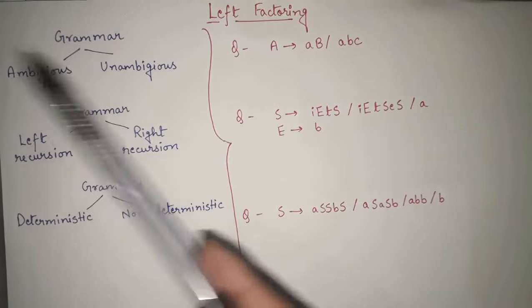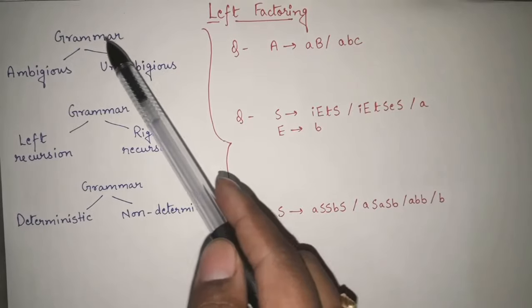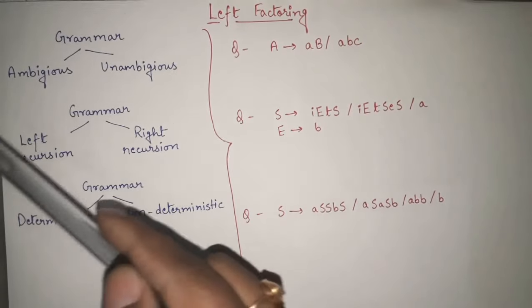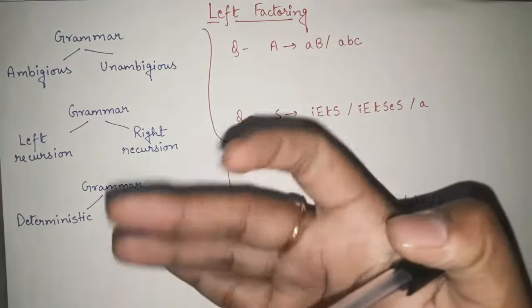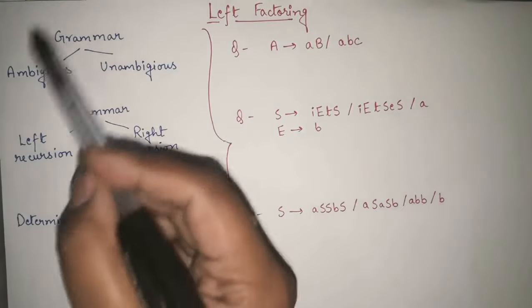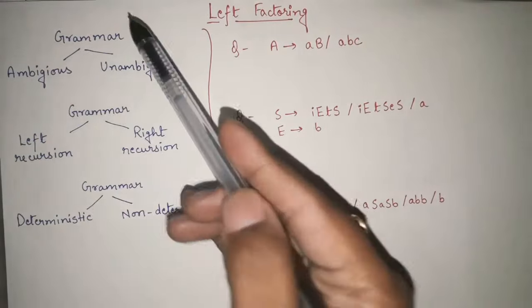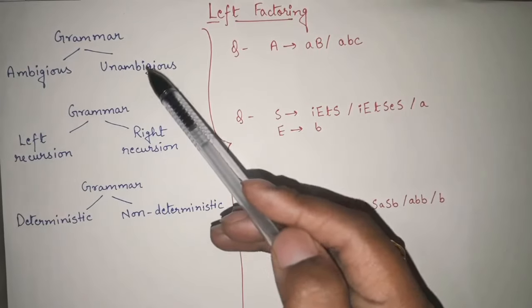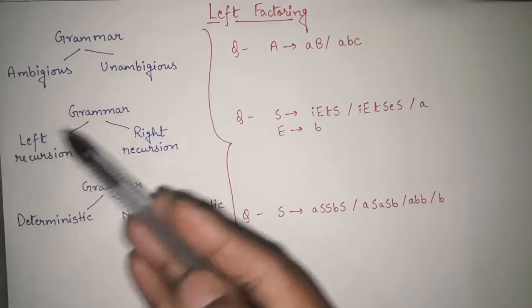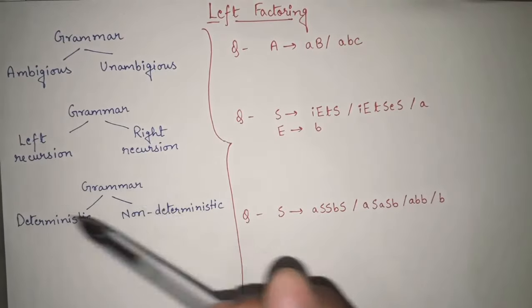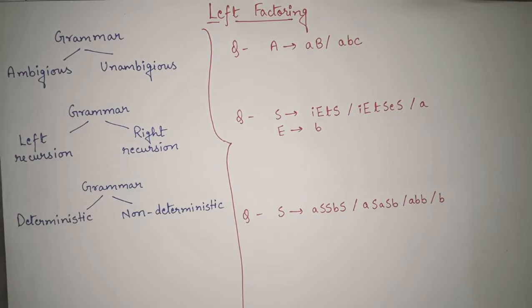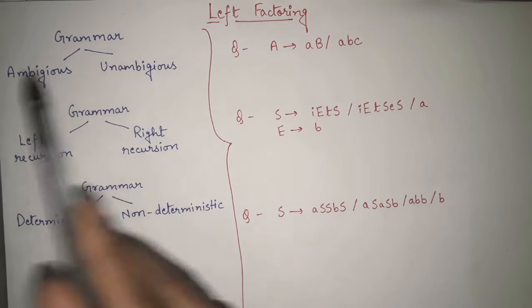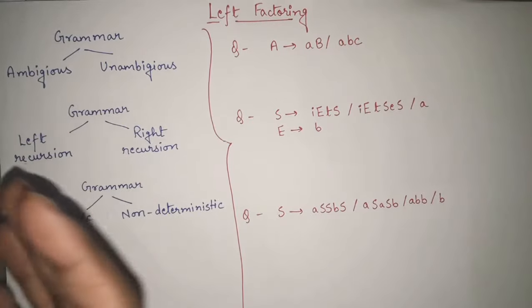We already know that grammar — here we are talking about the grammar in compiler design — can basically be categorized in three different ways. Our grammar can be categorized into ambiguous and unambiguous. It can be categorized into left recursion and right recursion. And it can also be categorized into deterministic and non-deterministic. It is very important for you to understand the difference between all of these.